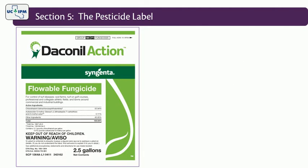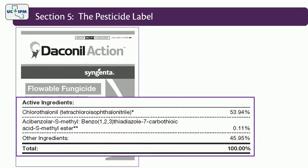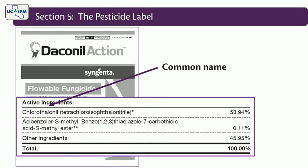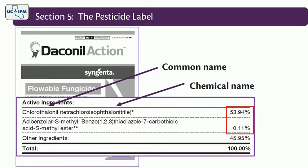There are also common names and chemical names. The common name is the active ingredient of the product. The chemical name is usually in parentheses next to the common name and is a more complex name that describes the chemical makeup and structure. When a pesticide contains more than one active ingredient, the label will state the percentage of each.